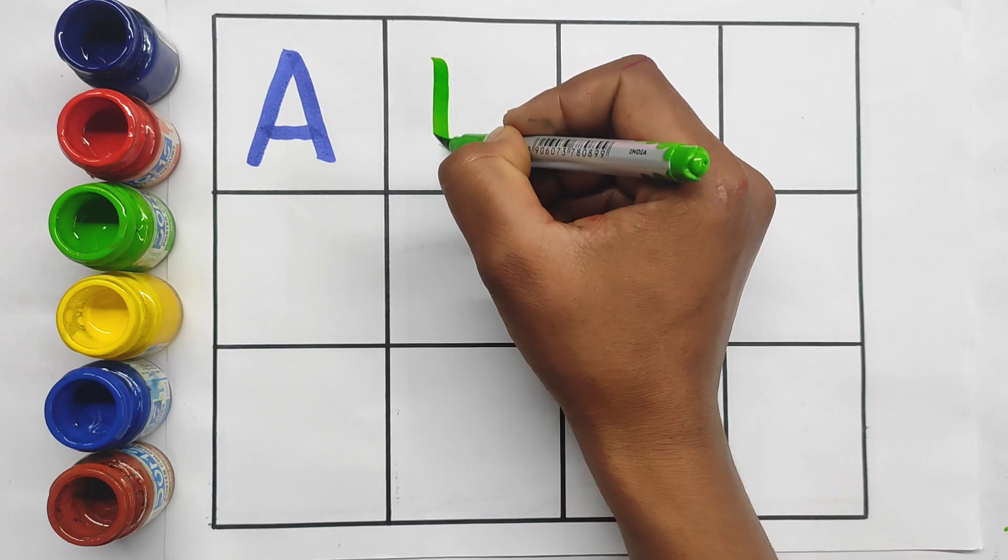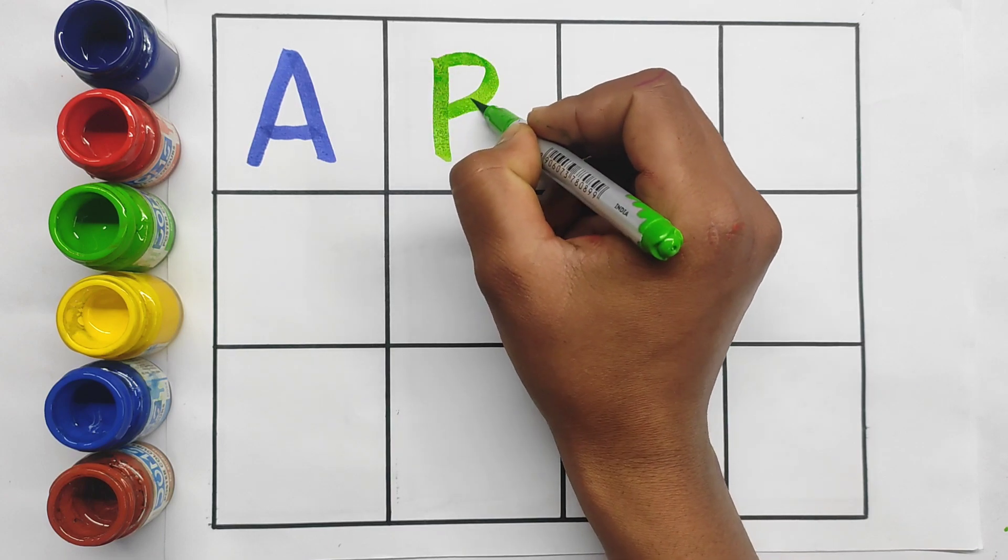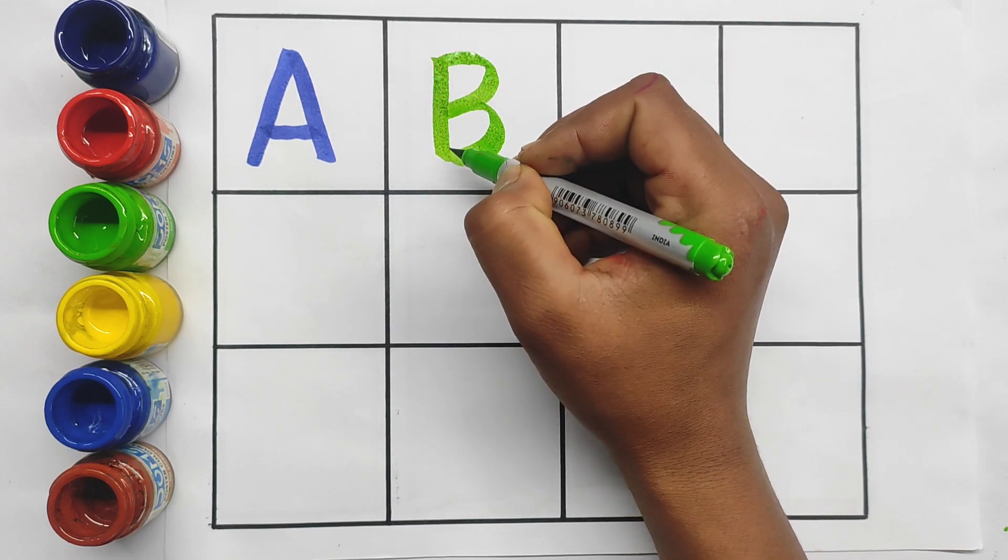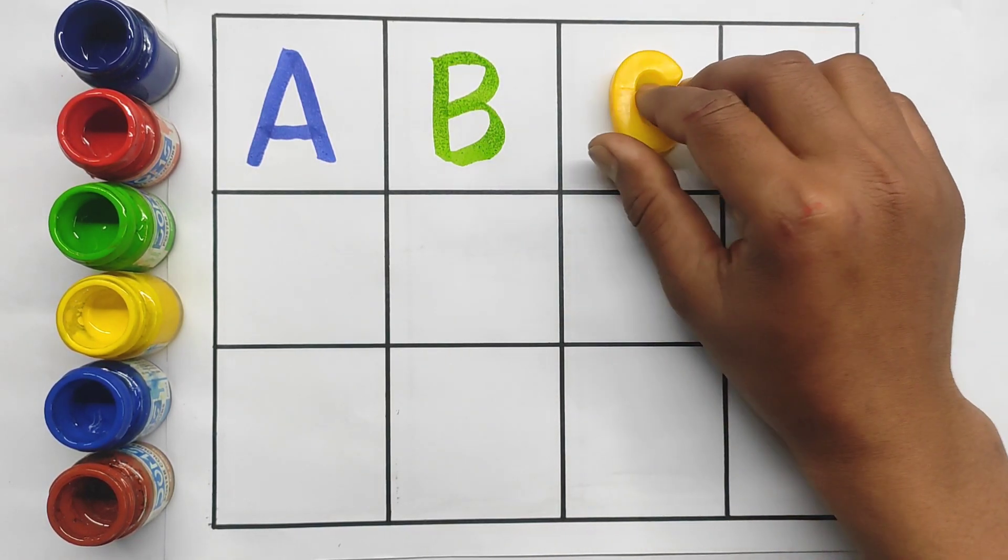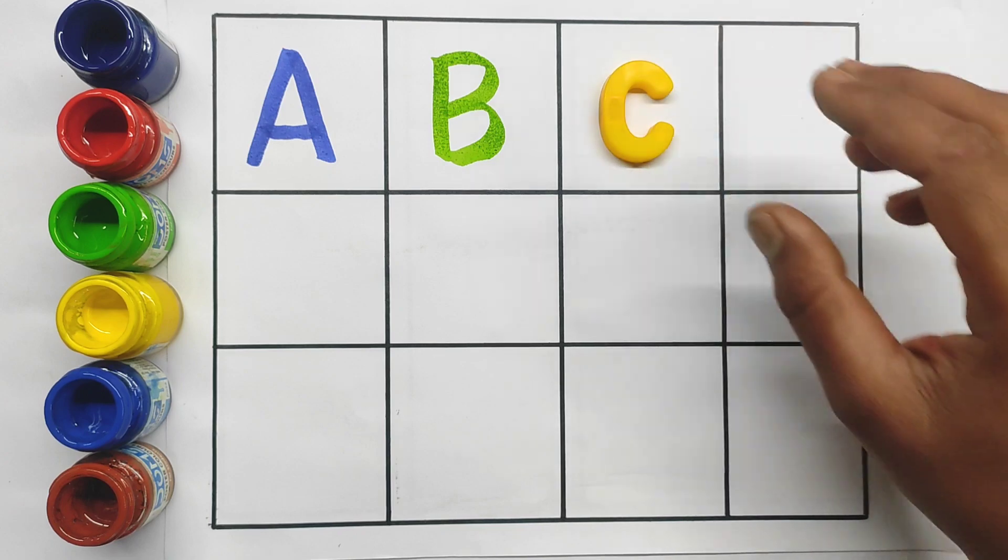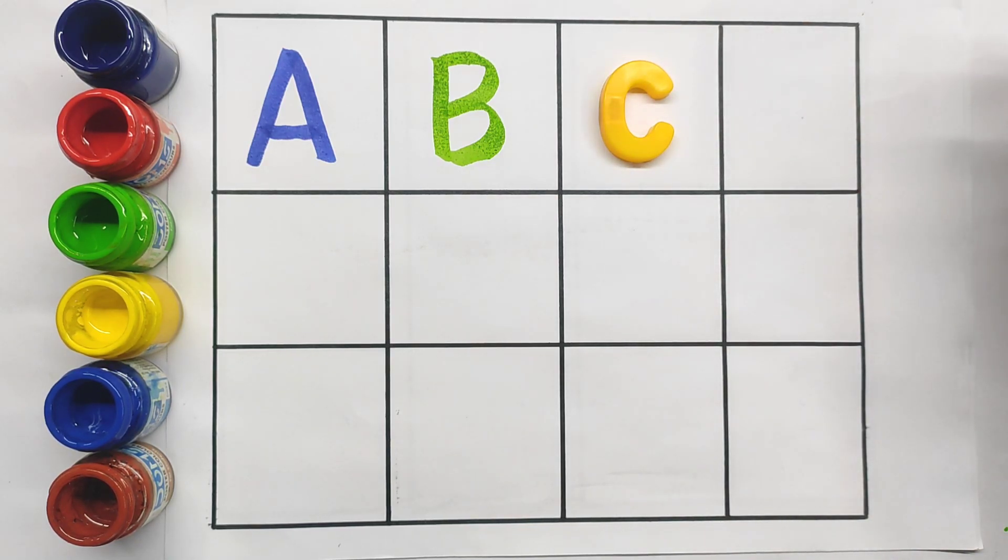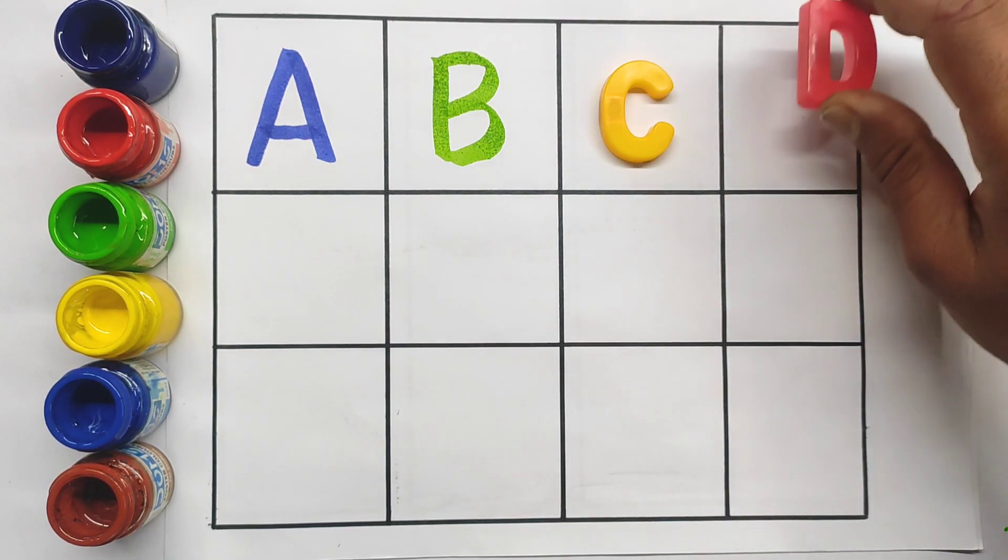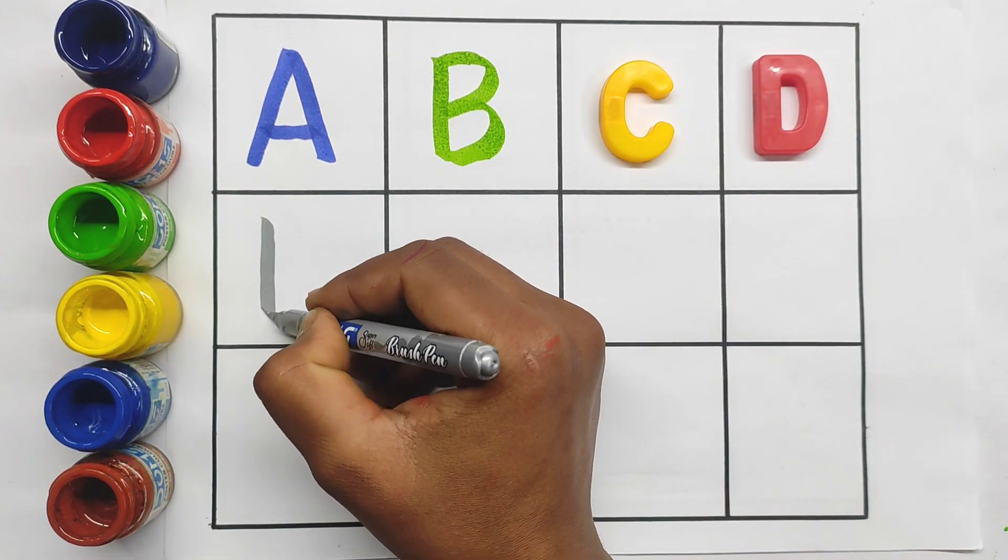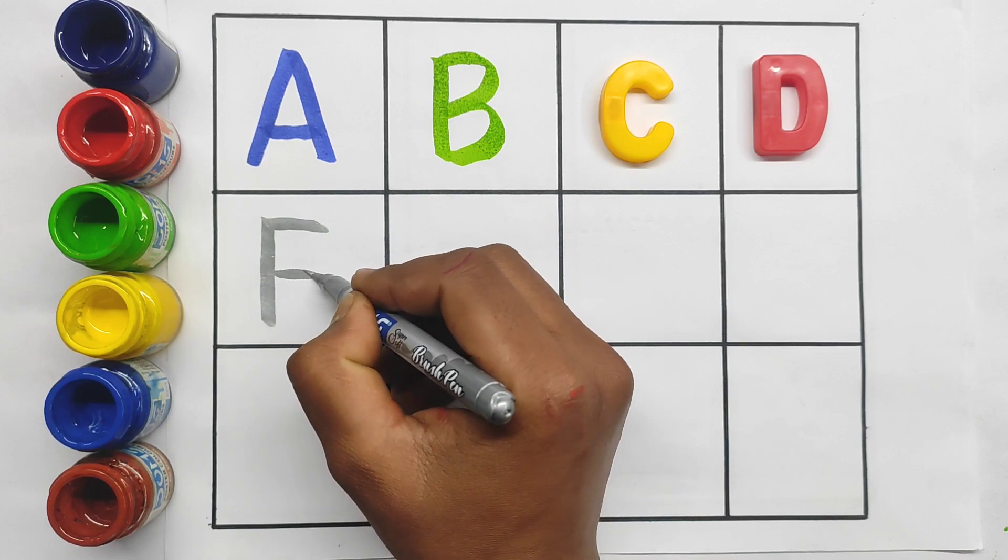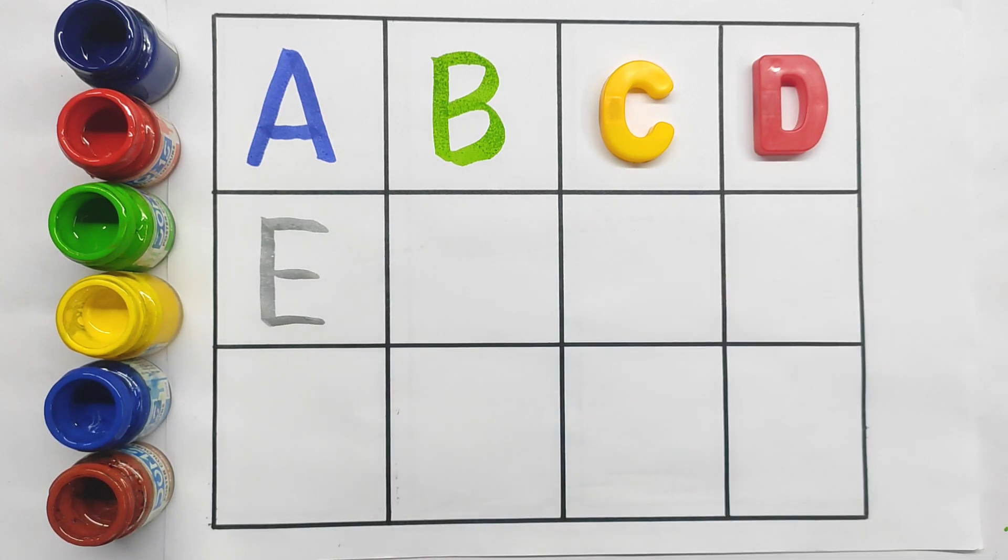B, B for ball. C, C for cat. D, D for dog. E, E for elephant.